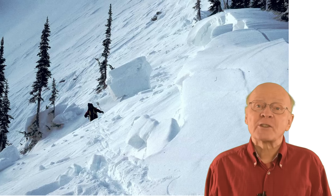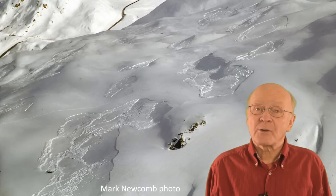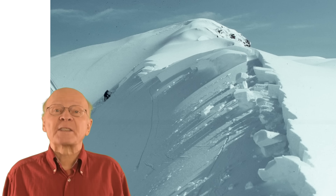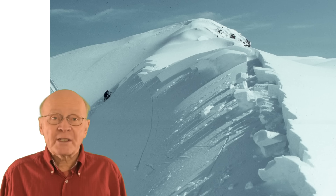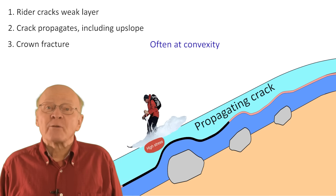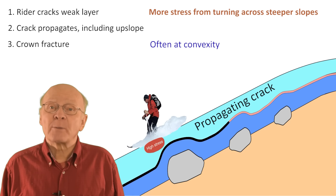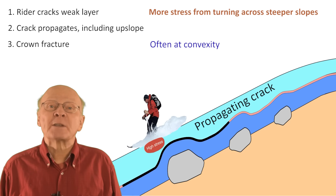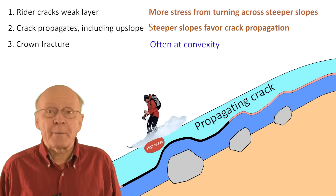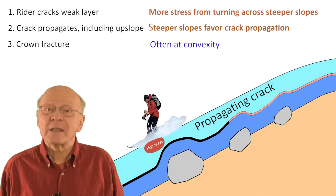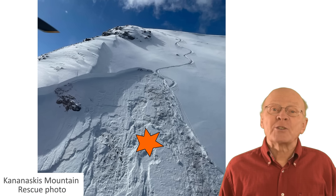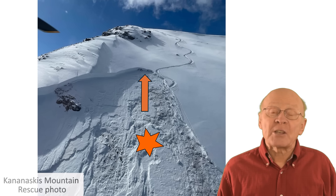The physical explanation for fractures often being at the convexity is not strong, but we have observations — lots of them. I say 'often' because there are important exceptions. For example, the crown of this hard slab avalanche is on the ridge at the top of the slope. So on steeper slopes, riders who turn across the slope are more likely to start cracks in weak layers. Also, steep slopes favor a transition to super shear crack propagation, which then makes further upslope propagation more likely. This means that triggering is more likely on the steeper slope than at the convexity. Also, the crown fracture is usually where the crack in the weak layer stops spreading upslope.